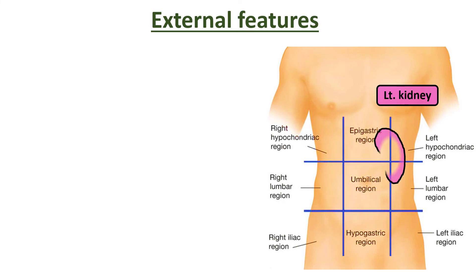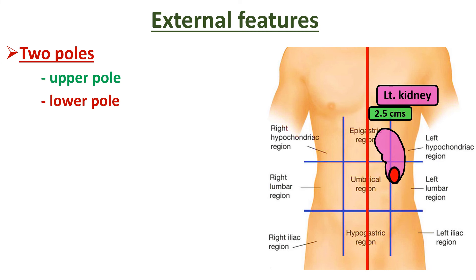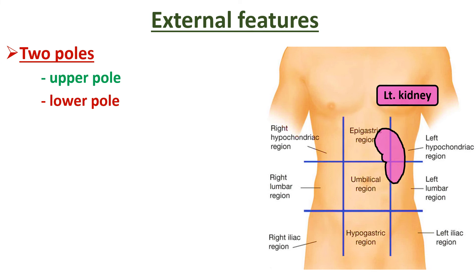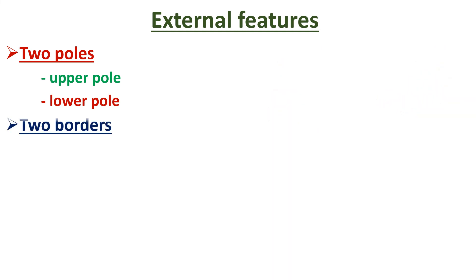Coming to the external features of the kidney — here is the left kidney. As both kidneys are bean-shaped, I have drawn only the left kidney to show the external features, which are the same for both. Each kidney has two poles: an upper pole and a lower pole. The upper pole is broader and lies 2.5 cm away from the median plane. The lower pole is pointed, lies 7.5 cm away from the midline, and lies 2.5 cm above the highest point of the iliac crest.